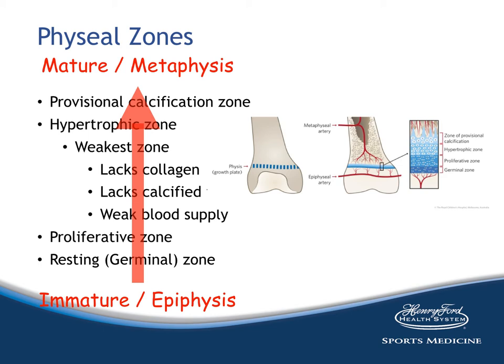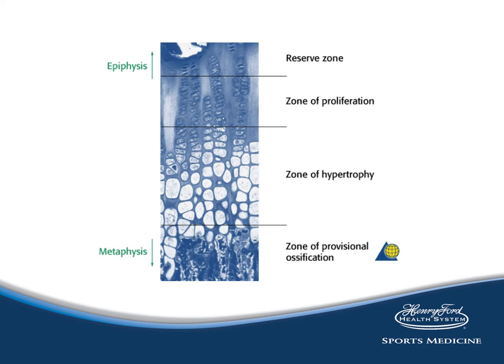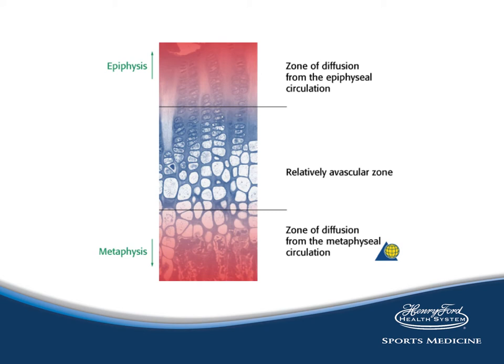Now with the epiphysis at the top of the page and the metaphysis at the bottom: the reserve or germinal zone is where the cells are born; the zone of proliferation is where numbers are increasing; the zone of hypertrophy is where cells increase in size; and closer to the metaphysis is the zone of provisional ossification. When we overlay the blood supply, there is a relative avascular zone in the zone of hypertrophy, which is one of the reasons this is the weakest zone of the epiphyseal plate. That's an overview of the maturity process of bone, especially at the growth plate area.